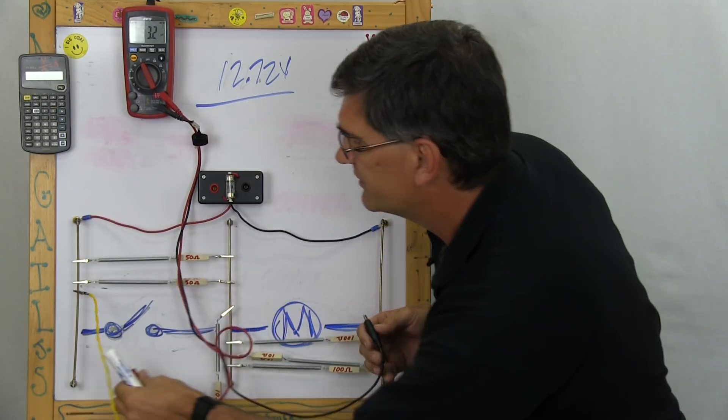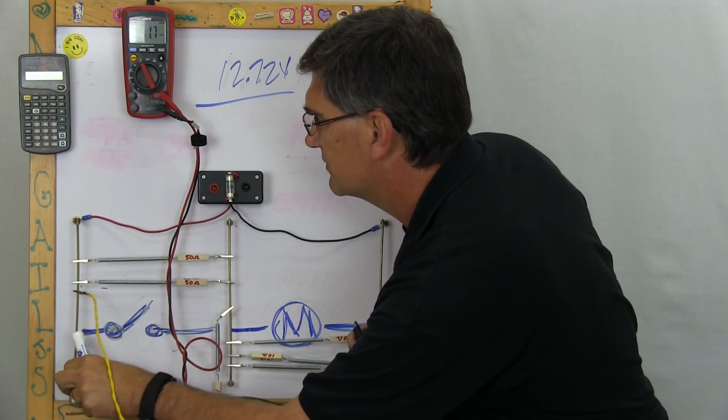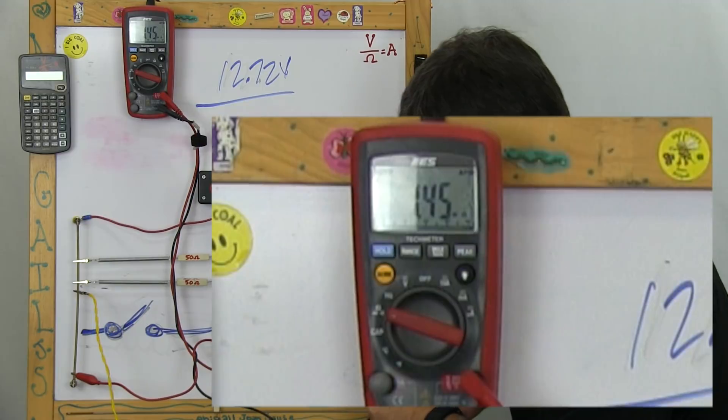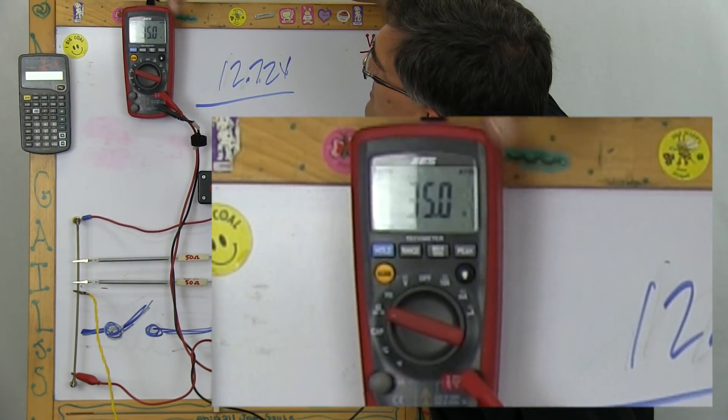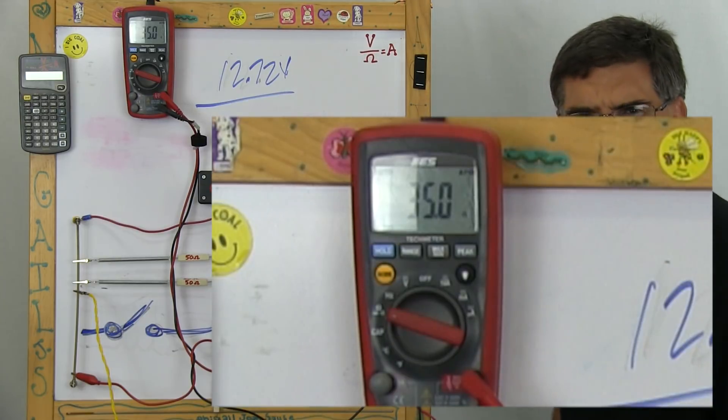At any rate, what you would then do is flip the meter over to ohms, and read your resistance. And in this case, the resistance is 35 ohms.